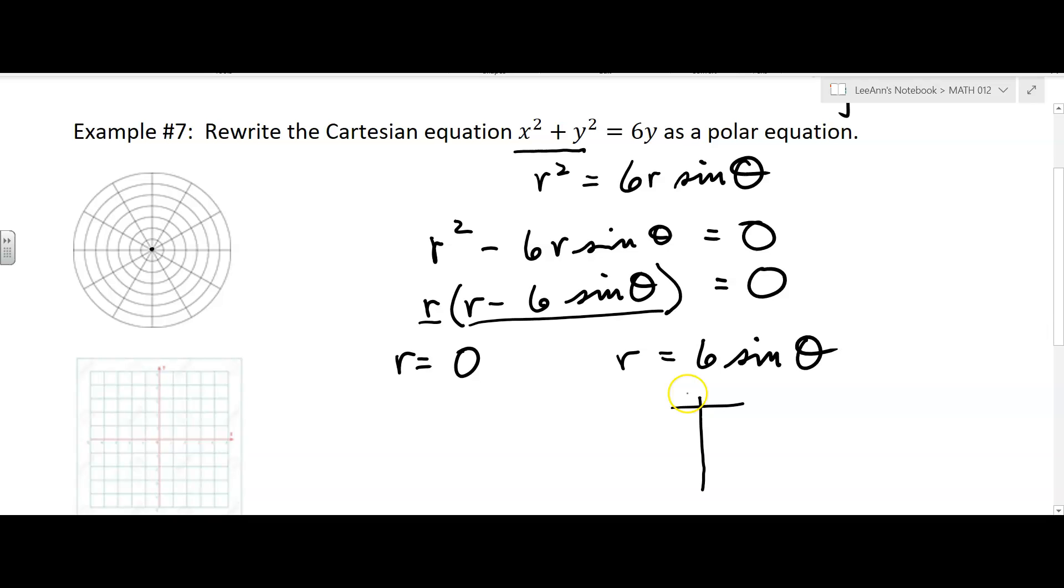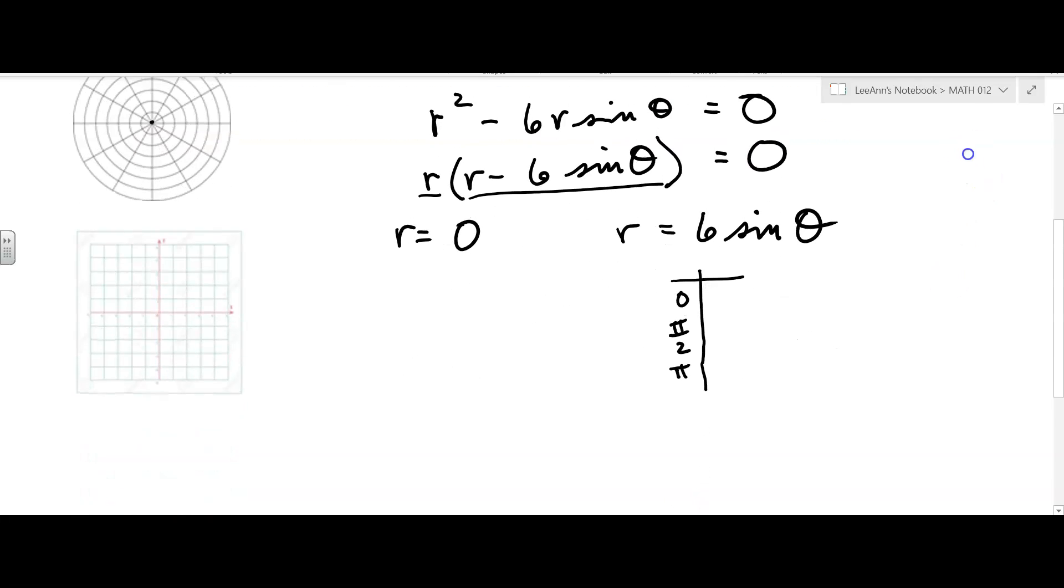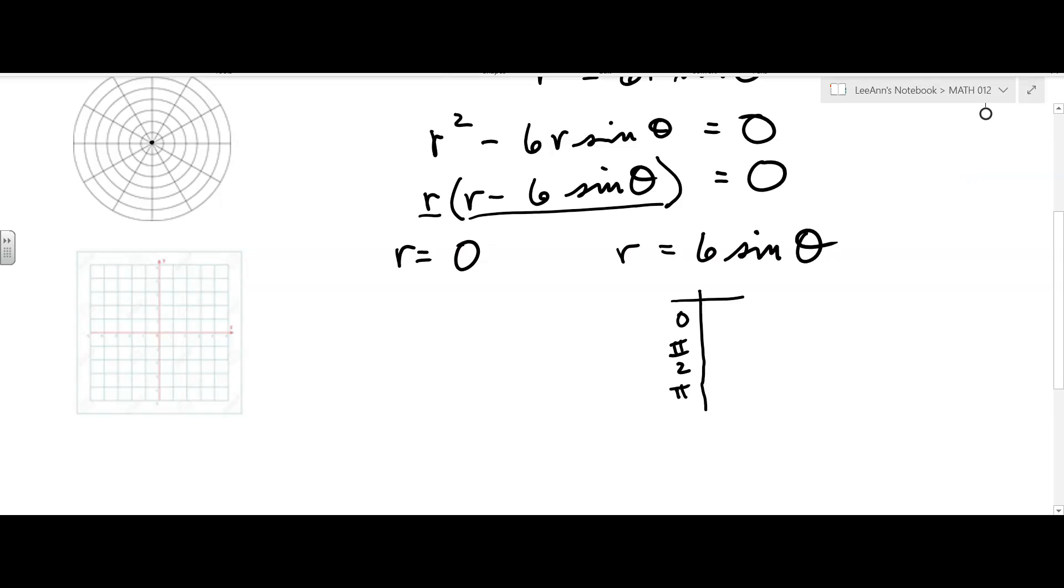0, pi over 2, pi, 3 pi over 2, and that'll be enough. Okay, and then we can say, well, what's the sine of those angles? Well, the sine of 0 is 0, pi over 2 is 1, pi is 0, 3 pi over 2 is negative 1.